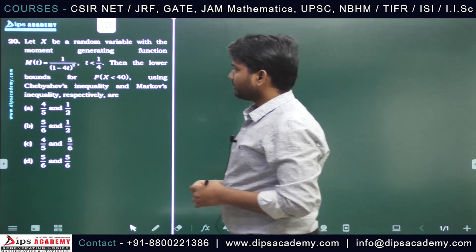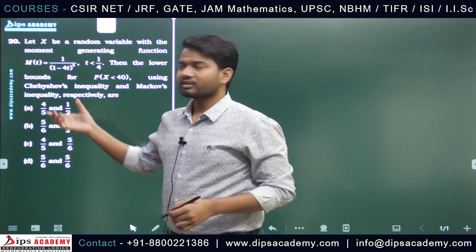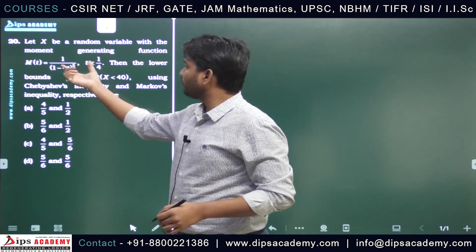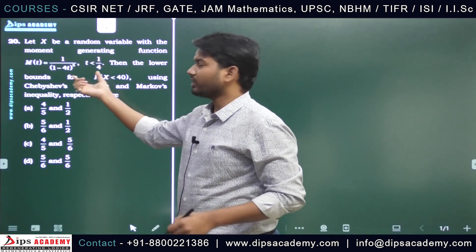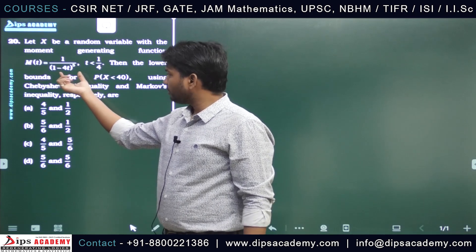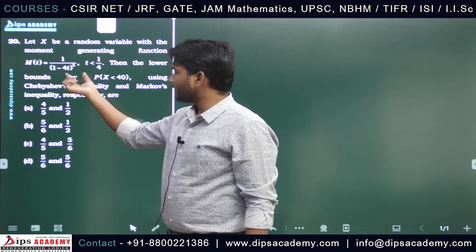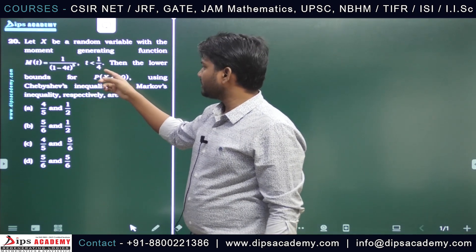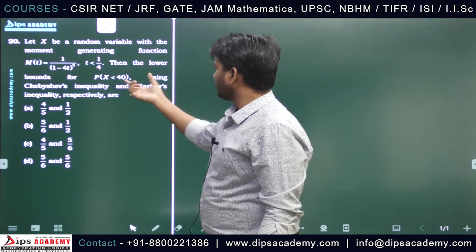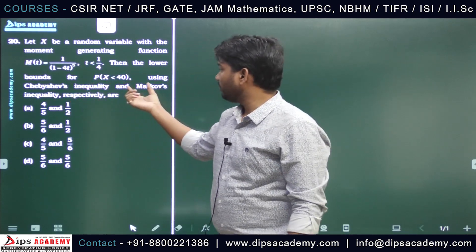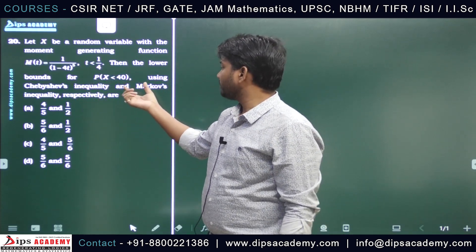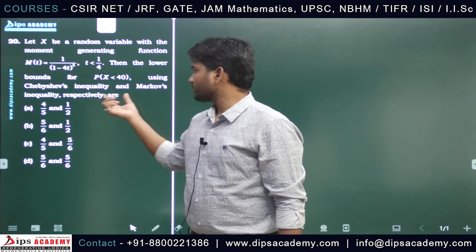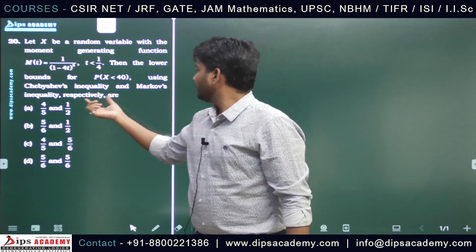We are having this question: let x be a random variable with the moment generating function M(t) = 1/(1 - 4t)^5, where t < 1/4. We need to find the lower bound for the probability that x is less than 40, using Chebyshev's inequality and Markov inequality.